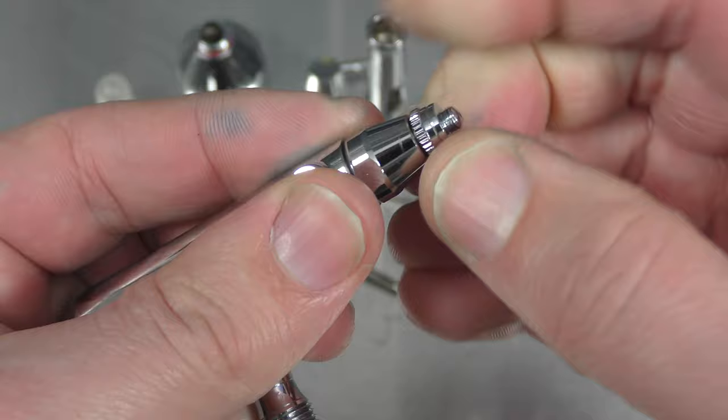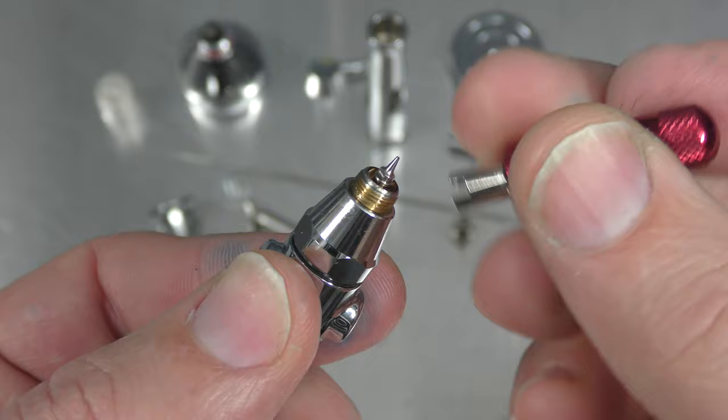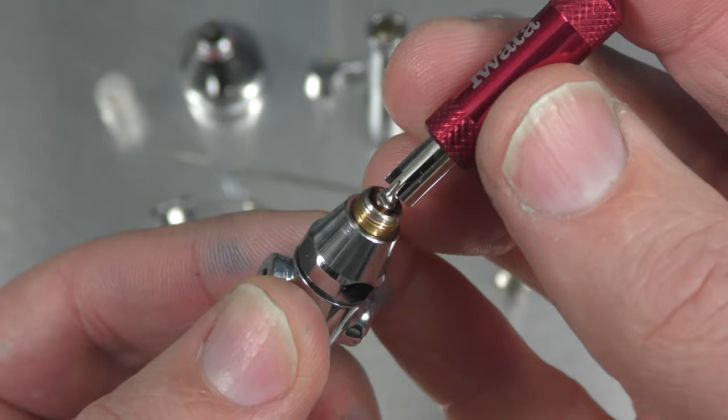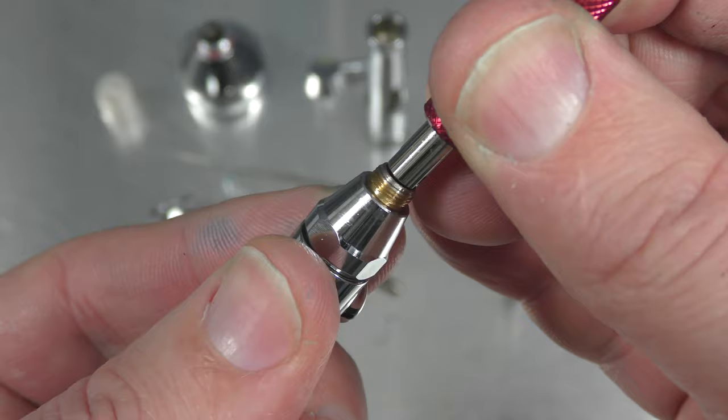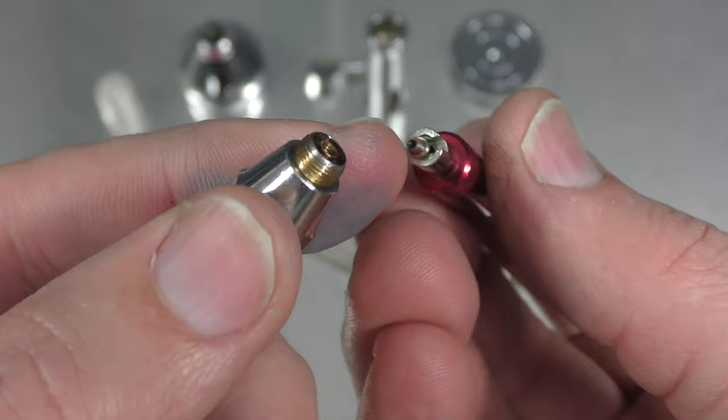So you can remove that now using this nozzle wrench. These are the ones I like to use because they fit directly over the front of the nozzle so that you don't risk damaging the thread or snapping off the thread. And when it's snug just carefully twist that off. And the other good thing is the tool actually holds it in place.